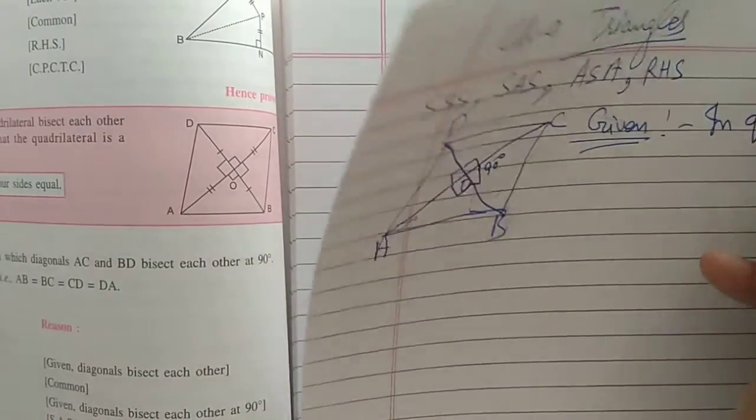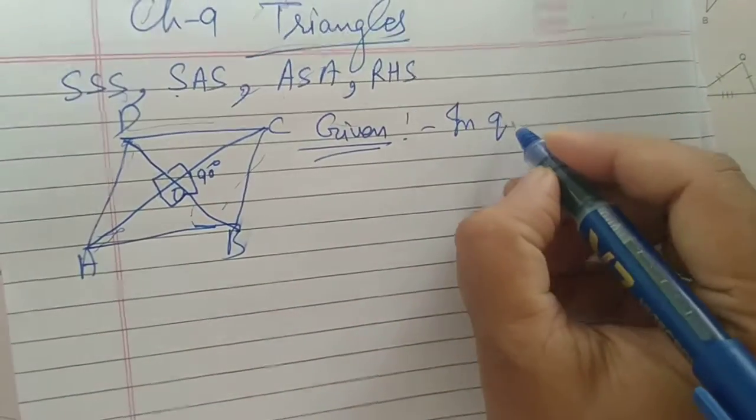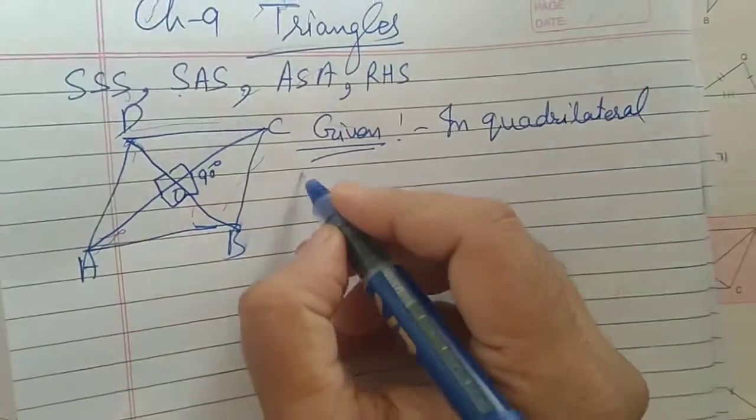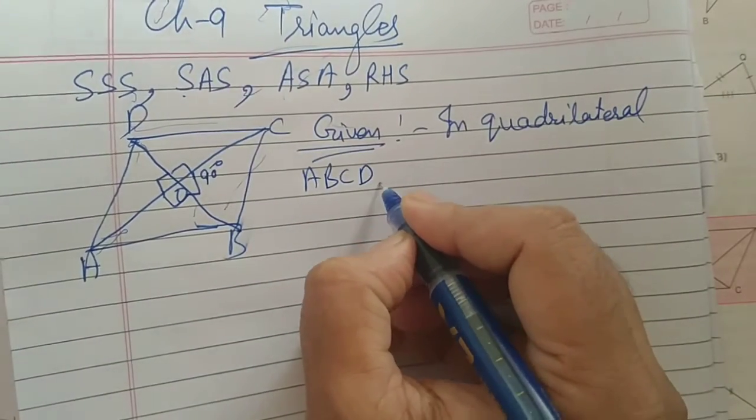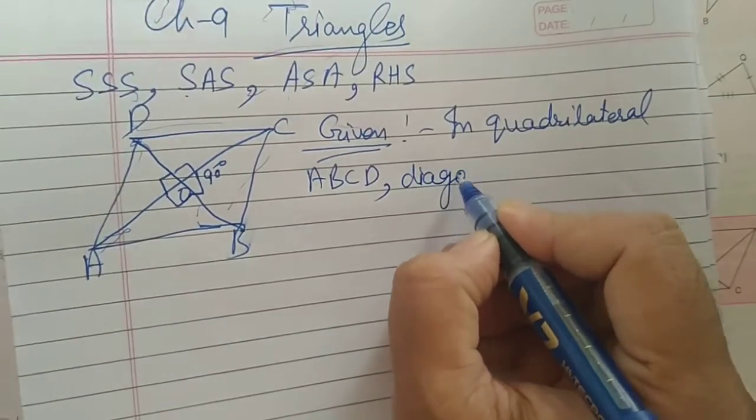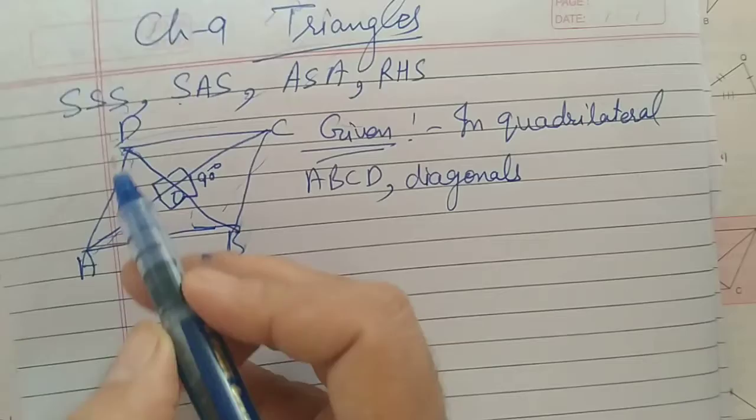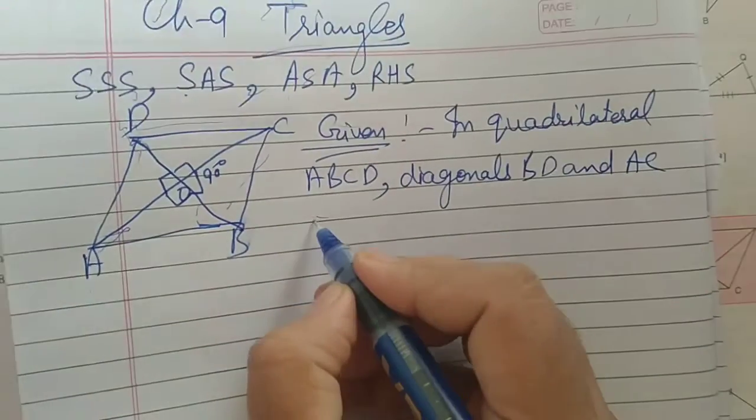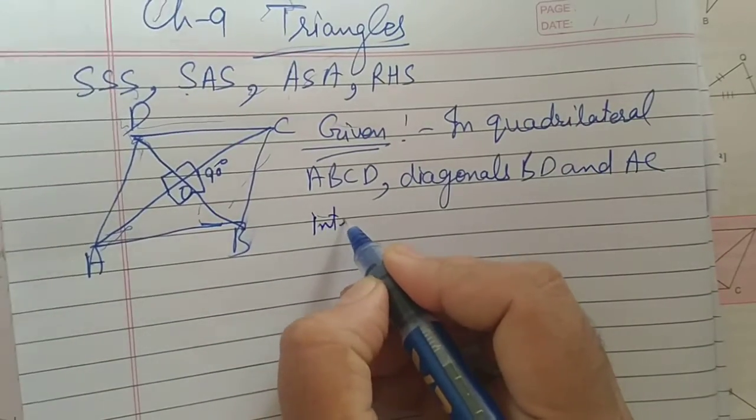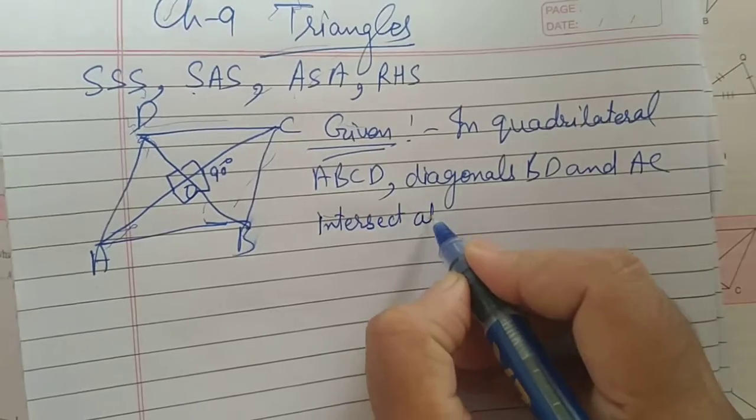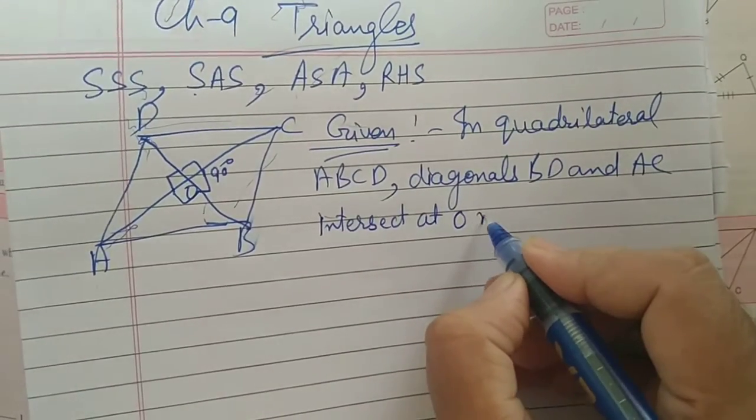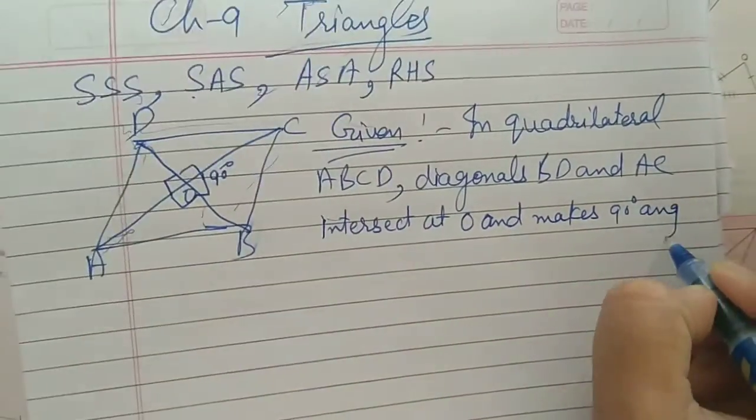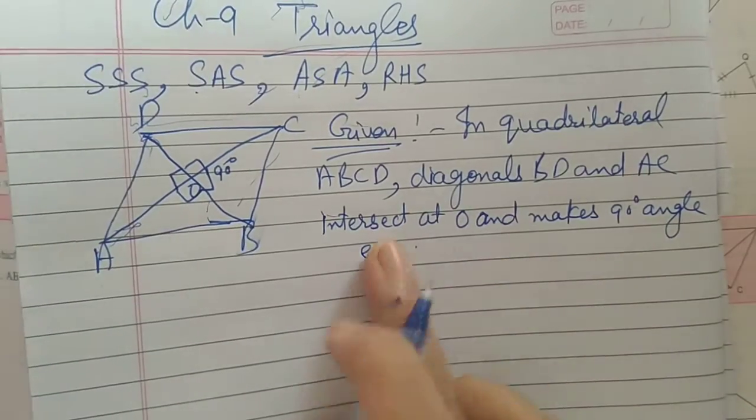In quadrilateral ABCD. Diagonals, what is the name of diagonals? BD and AC. BD and AC intersect at point O and makes 90 degree angle each. This is given.